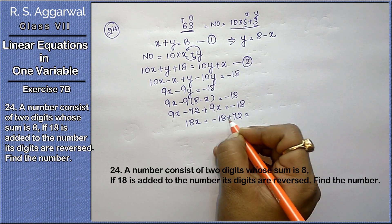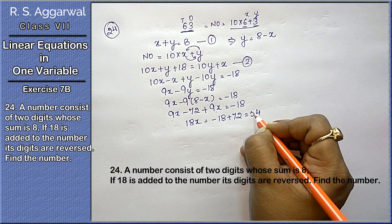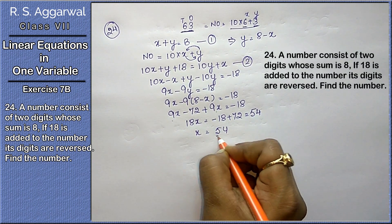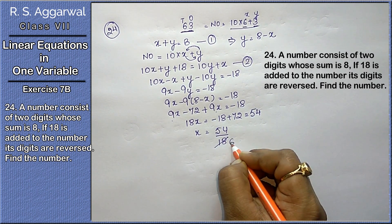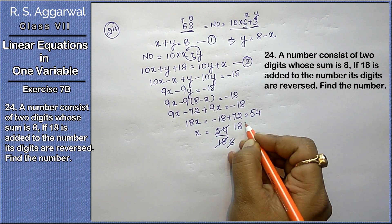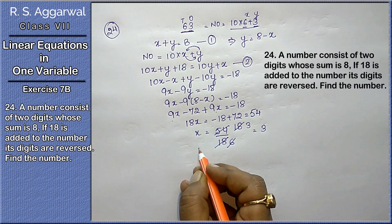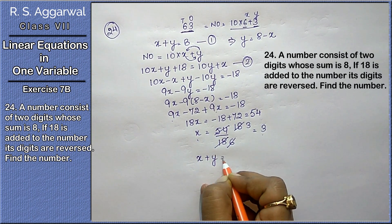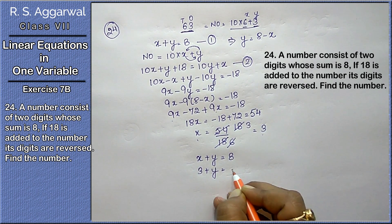Now 9x minus 72 plus 9x equals to minus 18. So 18x equals to minus 18 plus 72. x equals to 54 upon 18. Now dividing, the answer is 3. x's value is 3. Now for y: x plus y equals to 8. If x is 3, then y comes out to be 8 minus 3, that is 5.